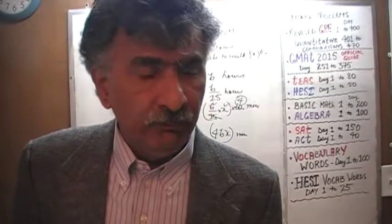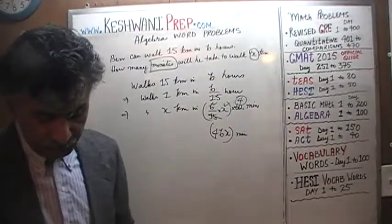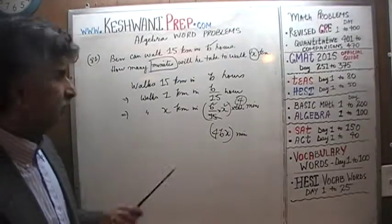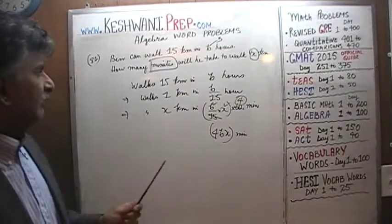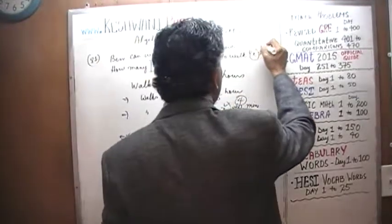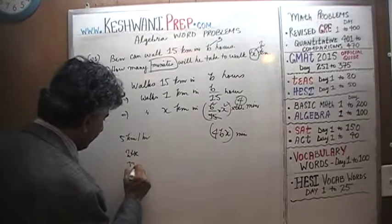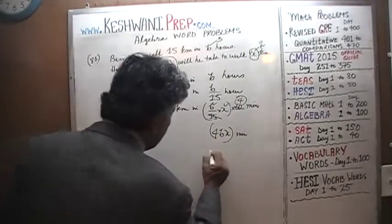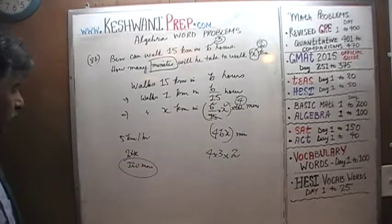How do we know if our answer is correct? As always, we plug in numbers for the variables, convert the problem into an arithmetic problem, solve it, and see if the formula gives the same answer. He walks 15 kilometers in B hours — let's make B equal 3 hours, so he walks 5 kilometers per hour. Let's make him walk X equals 2 kilometers. At 5 km per hour, 2 kilometers will take him... 2 hours, which is 120 minutes. Plugging into 4 times B times X: 4 times 3 times 2, we do not get 120. Something has gone wrong.